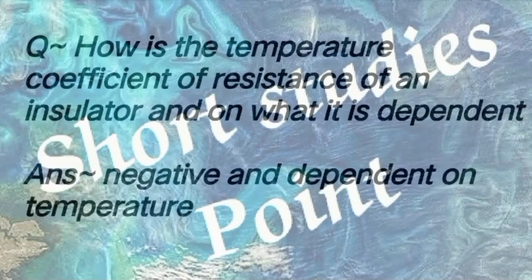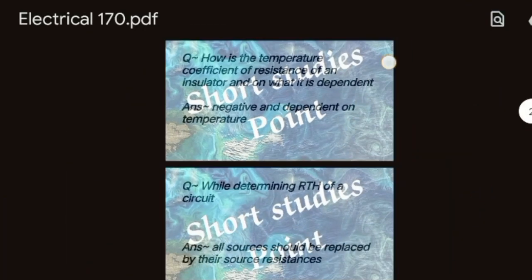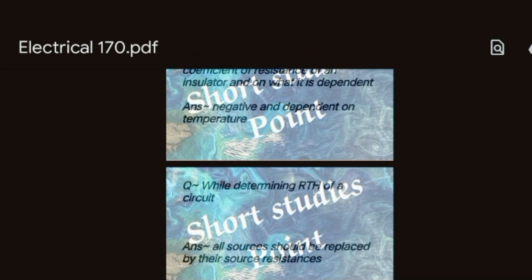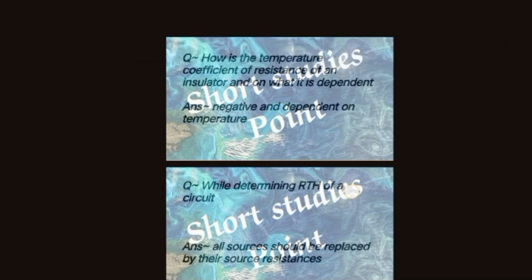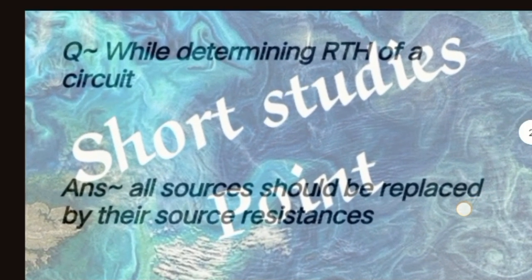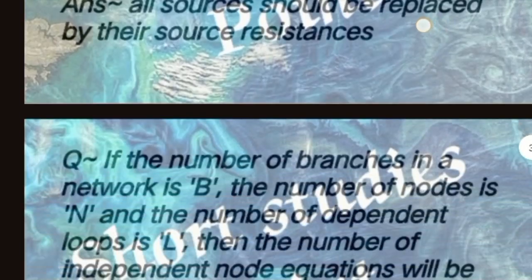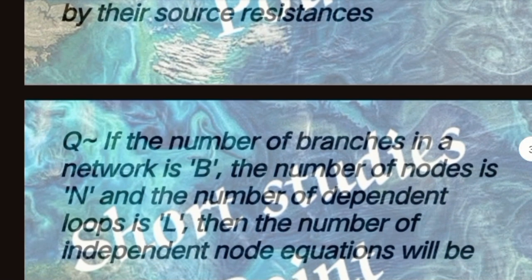Question: How is the temperature coefficient of resistance of an insulator and what is it dependent on? Answer: Negative and dependent on temperature. Next question: While determining Rth of a circuit, answer: all sources should be replaced by their source resistance.